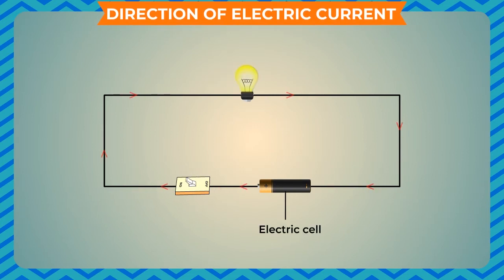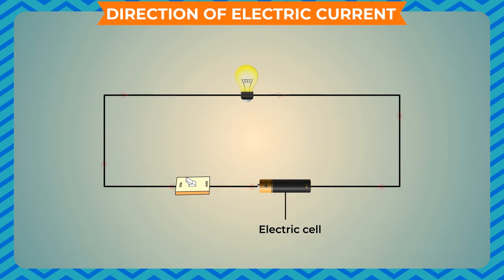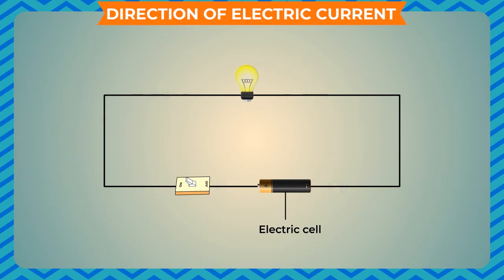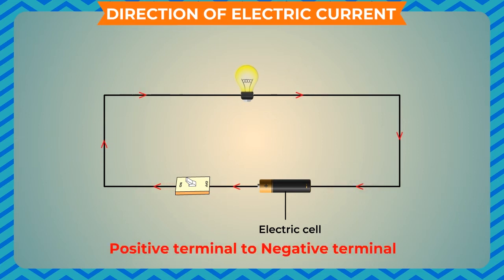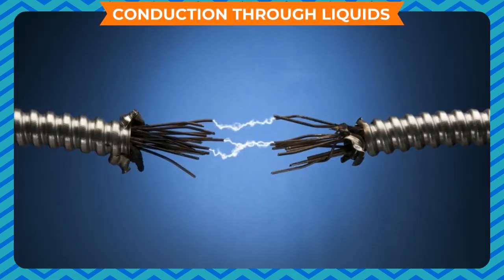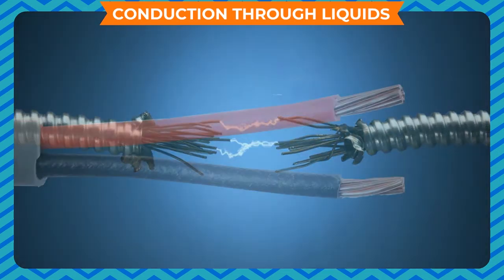Electrons flow from a region of higher concentration to the region of lower concentration. This means that electricity flows from the negative terminal to the positive terminal. However, earlier it was believed that the current flows from positive terminal to negative terminal, as the positive terminal is at a higher potential. Thus, conventional current flows from the positive terminal to the negative one, while electron current flows from negative to positive terminal.